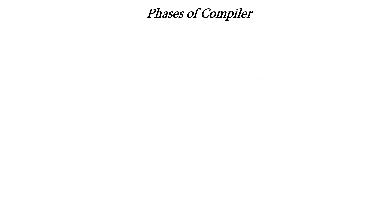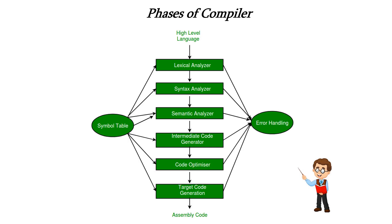Now let us see the architecture of phases of compiler. Here we have six phases. The first phase has the input high level language and the last phase gives the output as assembly code. Symbol table acts as the bookkeeping for all the phases, so it is connected to all the phases. Error handling is also connected to all the phases, which handles the errors.